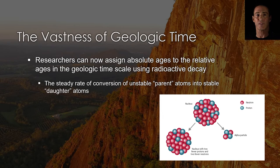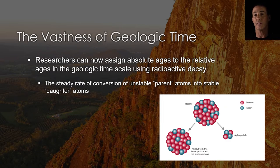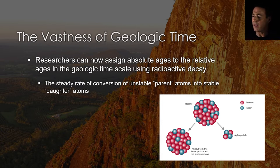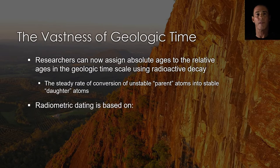When radioactivity was discovered in the late 19th century, researchers realized that radioactive decay furnished a way to assign absolute ages, in years, to the relative ages in the geologic time scale. The steady rate at which unstable or parent atoms are converted into more stable daughter atoms provides a constant metric to measure ages against.